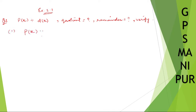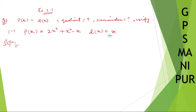p(x) is equal to 2x³ + x² − x, and d(x) is equal to x. We write d(x) on the outside and divide into 2x³ + x² − x. This is in descending order — you can see the highest power first, then decreasing powers.